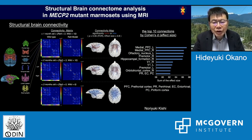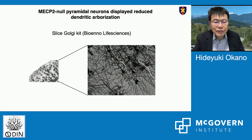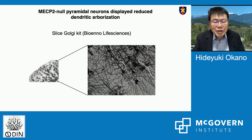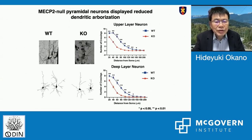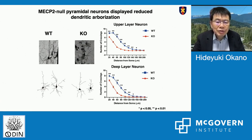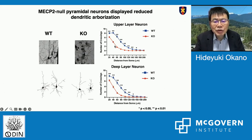The question is: what is underlying the cortical connectivity changes? We investigated this using Golgi staining — a classical but very informative method. This shows dendritic arborization in wild-type and knockout marmosets. You can see that dendritic arborization appears to be very poor in knockout animals. This result is from the prefrontal cortex, and we quantified by Sholl analysis that, particularly in upper-layer neurons, dendritic arborization was very poor in MeCP2 mutants.